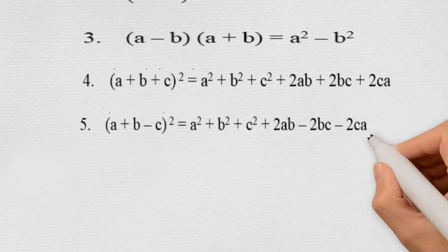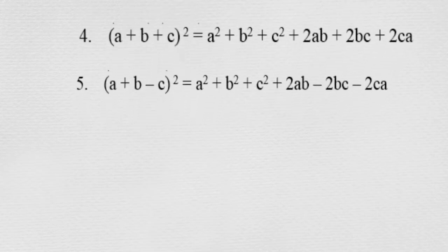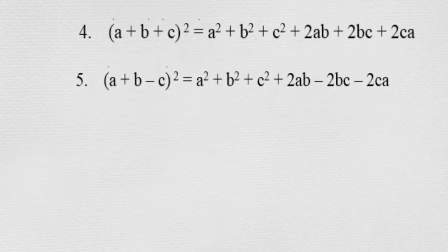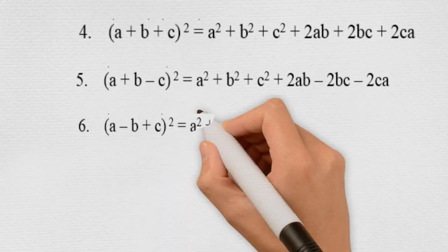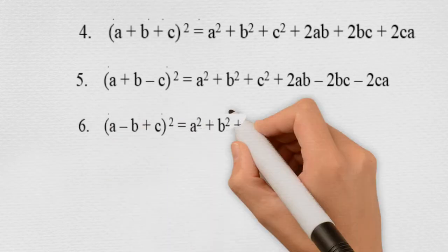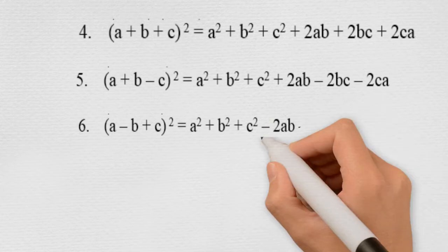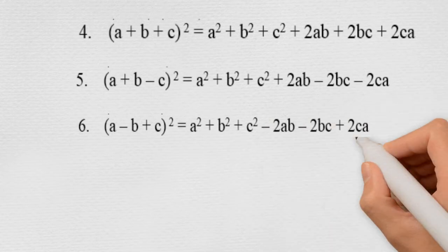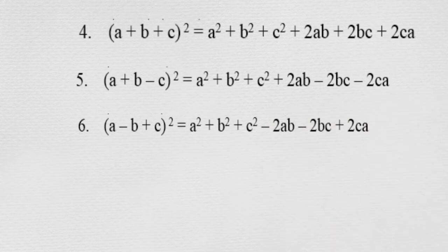The fifth identity is (a + b − c) whole square, which is equal to a square plus b square plus c square plus 2ab minus 2bc minus 2ca. The sixth identity is (a − b + c) whole square, which is equal to a square plus b square plus c square minus 2ab plus 2bc plus 2ca.